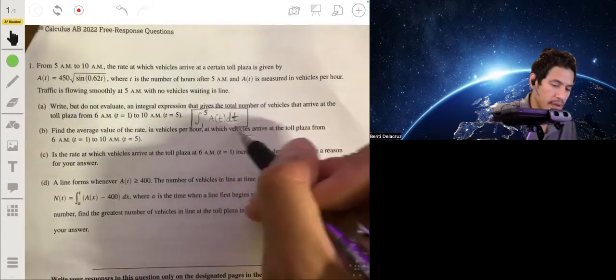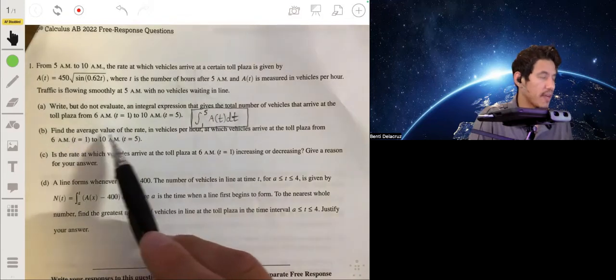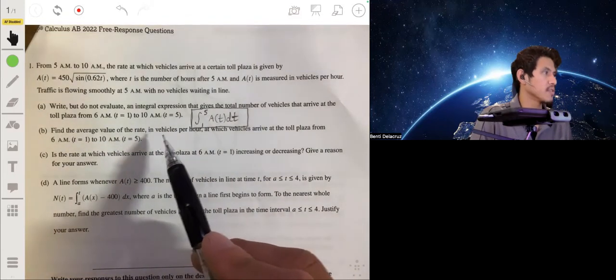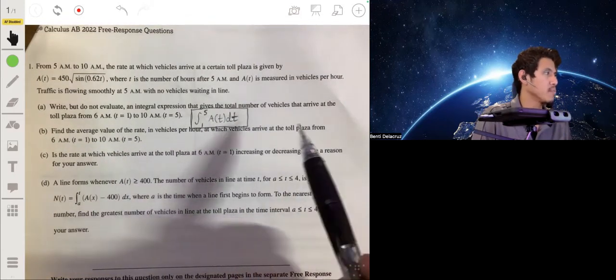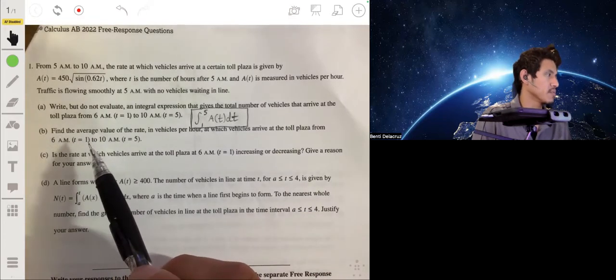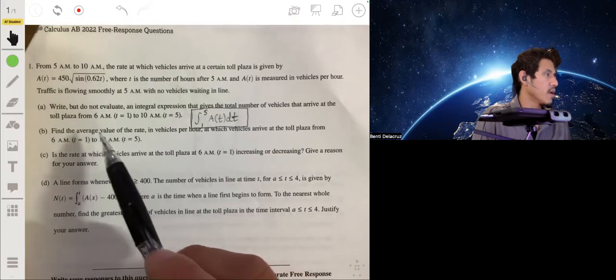All right, so let's look at Part B. Find the average value of the rate in vehicles per hour at which the vehicles arrive at the toll plaza from 6 a.m. or T equals 1 to 10 a.m. or T equals 5.